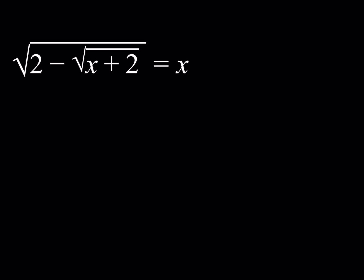So we're going to be solving this radical equation. Obviously, if you have a radical equation, you can try to eliminate the radical by squaring both sides, and then so on and so forth. So let's go ahead and try that first and see what happens. If I square both sides here in this expression, I should be getting something like 2 minus the square root of x plus 2 equals x squared.